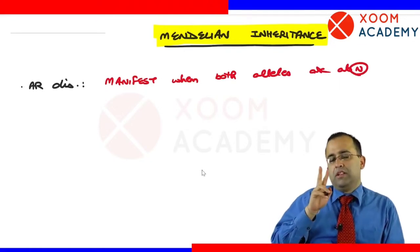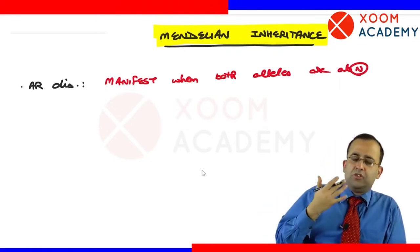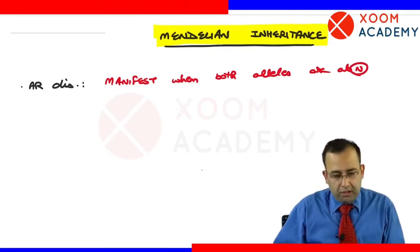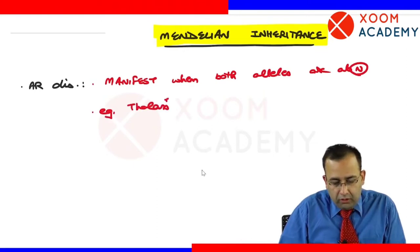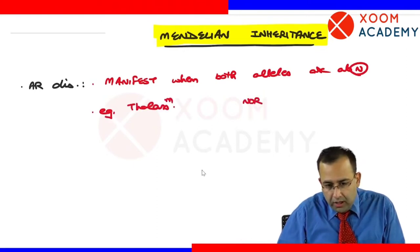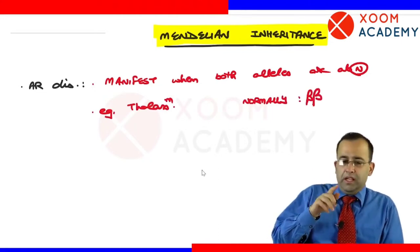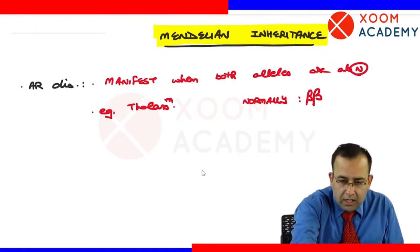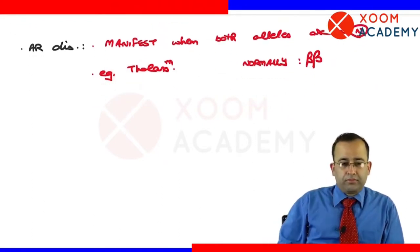Every gene locus has two alleles. An example of an autosomal recessive disease is thalassemia. Normally, we should be beta-beta — that is the normal state. Each gene locus has two alleles, so the normal genotype is beta-beta.